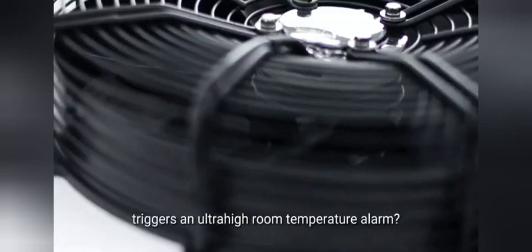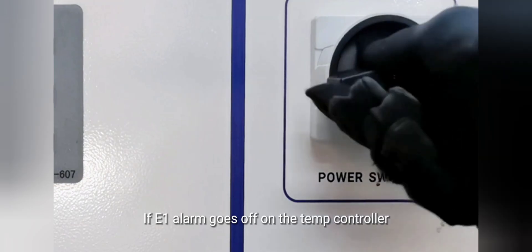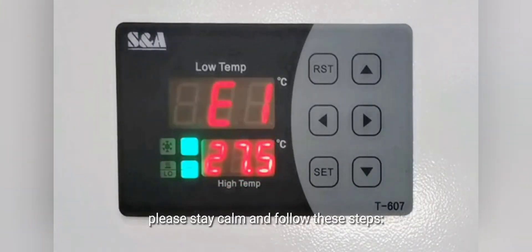Chiller CWFL2000 triggers an ultra-high room temperature alarm. If the E1 alarm goes off on the temp controller when you turn on the chiller, please stay calm and follow these steps.